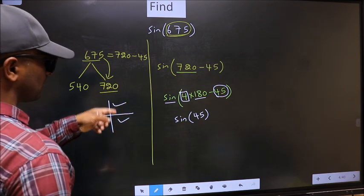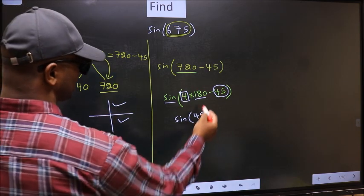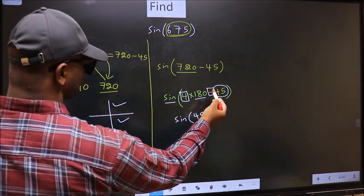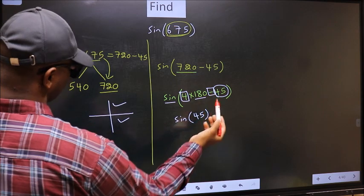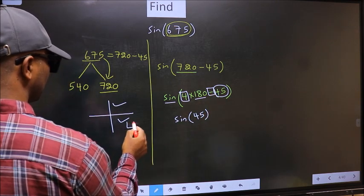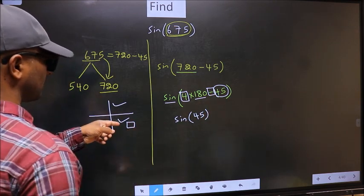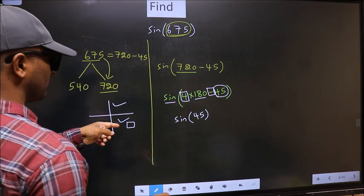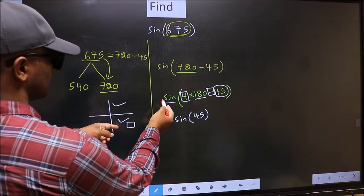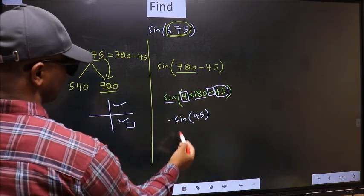So now to select the quadrant, we should look at this symbol. Here we have negative. That means angle lies in the fourth quadrant. And in the fourth quadrant, sin is negative. So we should put negative.